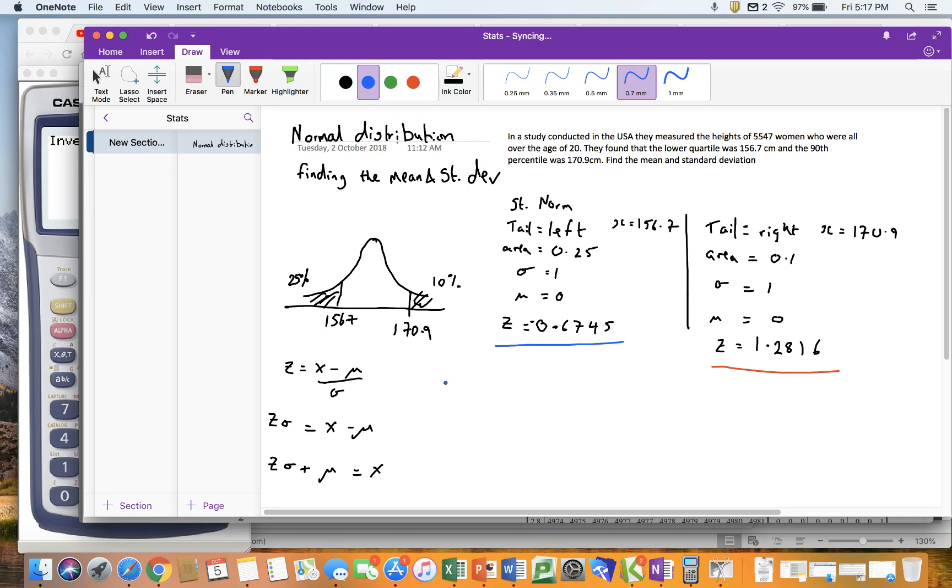So I've got minus 0.6745 sigma plus mu equals 156.7, and I've got this one which is 1.2816 sigma plus mu equals 170.9. Now, those are a pair of simultaneous equations, and if you're so inclined, you can work out what that is algebraically.